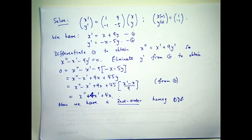So now, assuming we can do our algebra, now we have a second-order homogeneous ODE x double prime plus 4x prime plus 4x equals 0.